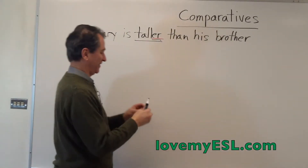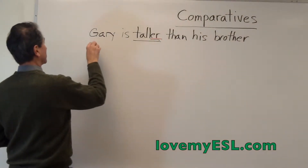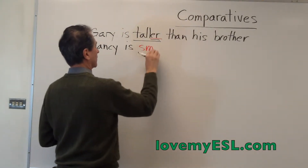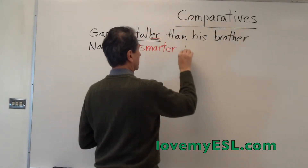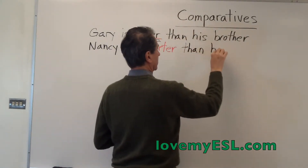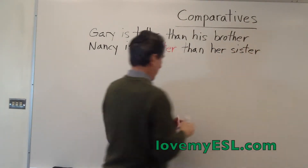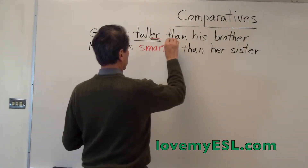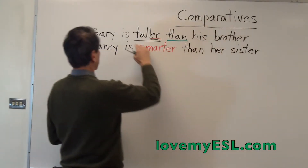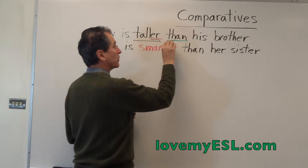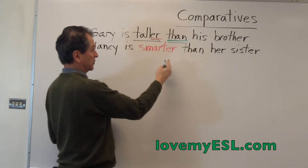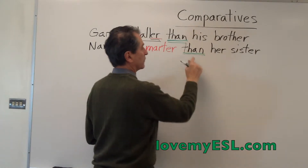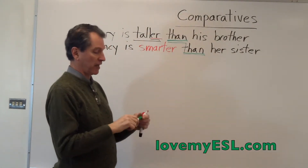I don't know why — maybe he drinks more milk! The second example: Nancy is smarter than her sister. In both of these examples, I have the word 'than' at the end. When you have A and you're comparing it to B — in this case, Gary and his brother — you must put the word 'than' between the two. The comparison word has the -ER on the end: taller than his brother, smarter than her sister. A lot of people forget to put 'than' in there, but it's really important.